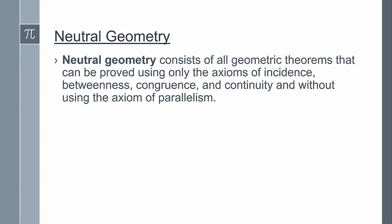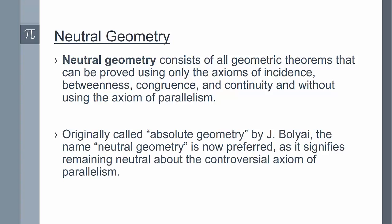So this is the last of the Hilbert's axioms. We're going to look at neutral geometry, which consists of all the geometric theorems that can be proved using only the axioms of incidence, betweenness, congruence, and continuity, and without using the axiom of parallelism. Bolyai actually called this type of geometry absolute geometry, but this name is a bit misleading because it doesn't include elliptic geometry and other geometries. So the preferred name now is neutral geometry, as it signifies that we're going to be remaining neutral about the controversial axiom of parallelism.